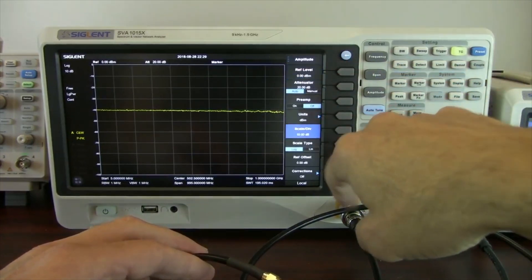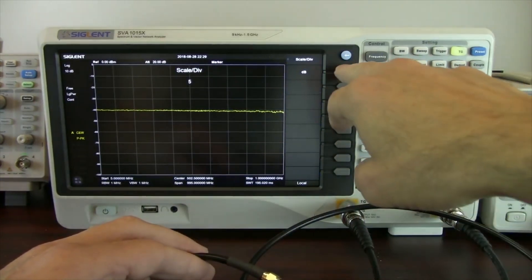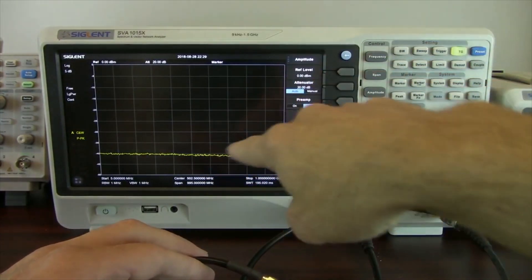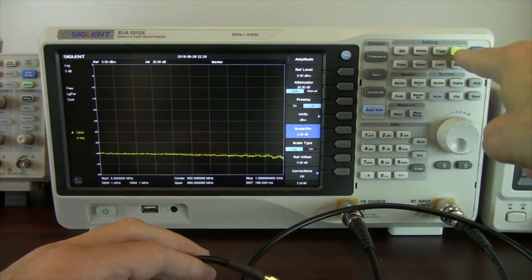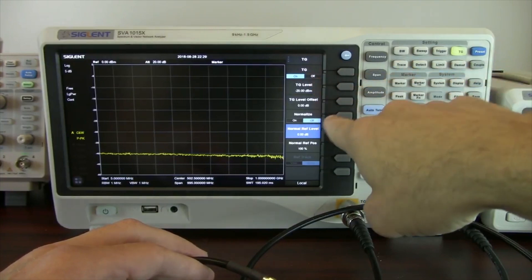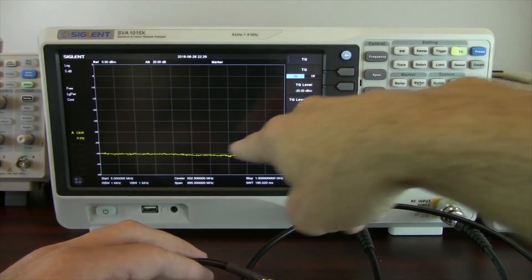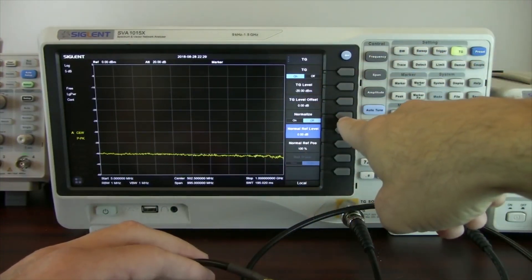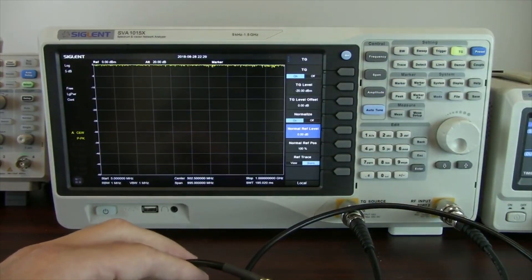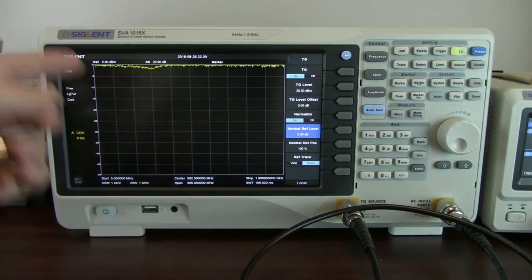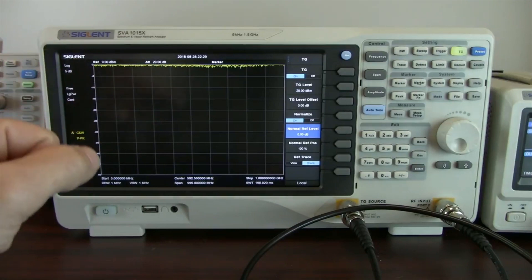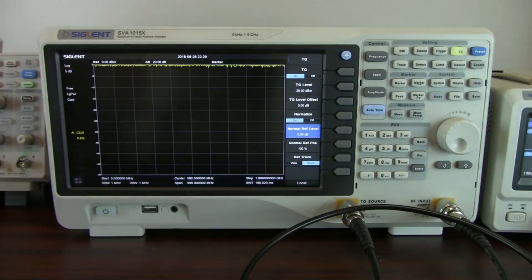I'm going to set our amplitude scale to 5 dB, and now I'm going to go back to the tracking generator menu, and I'm going to turn on the tracking generator. We're reading minus 40. Now I'm going to normalize it, and that's going to mathematically subtract the original value from the new value, and that's going to give us 0 dBm.